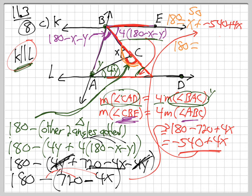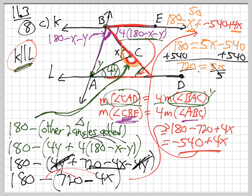So 180 equals X plus 4X, 5X minus 540. We're almost there. Add the 540. 5X is 720. Last step, divide by 5. Oops, that's a 5 there. X equals 144.